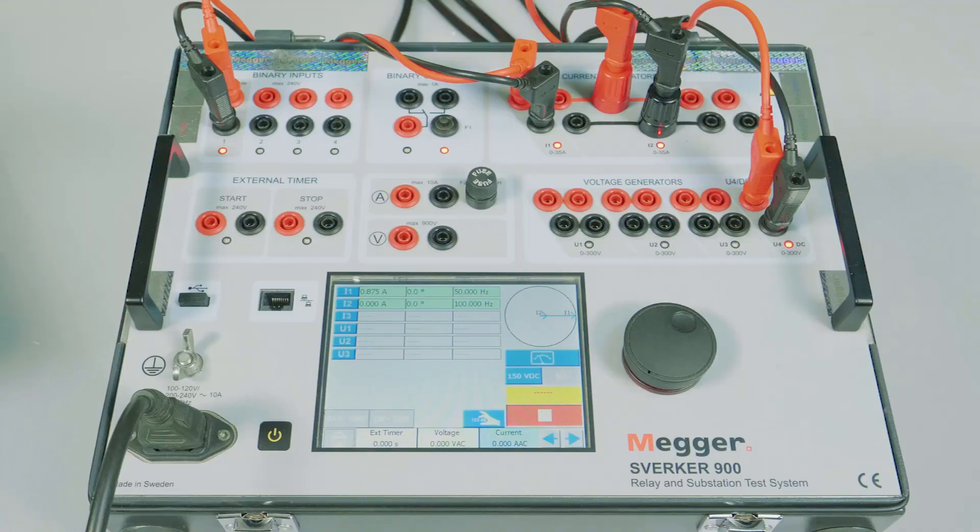Let us increase the CT current gradually and verify the dropout. The dropout can be identified when this LED stops glowing.